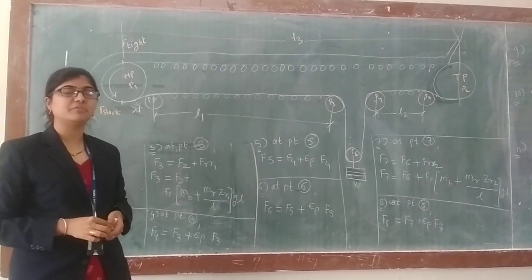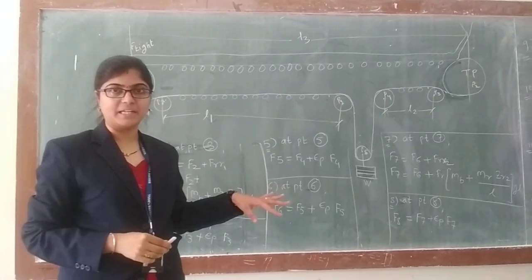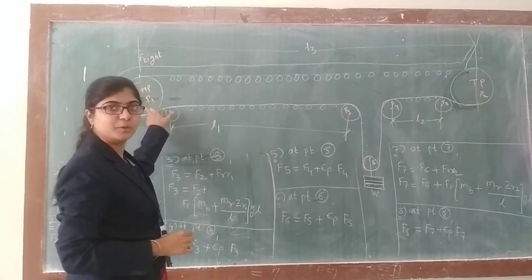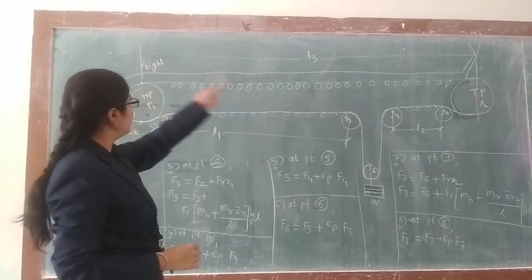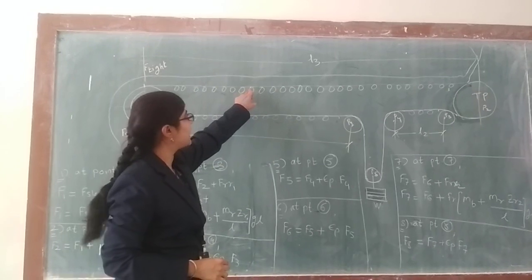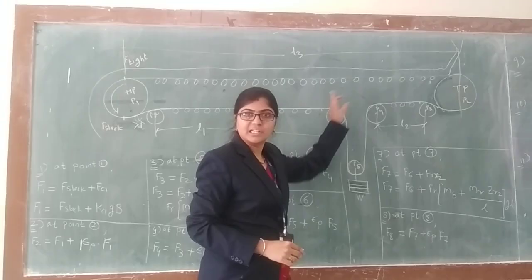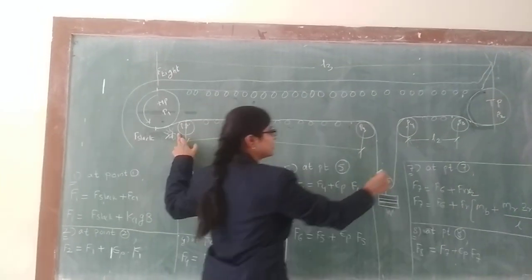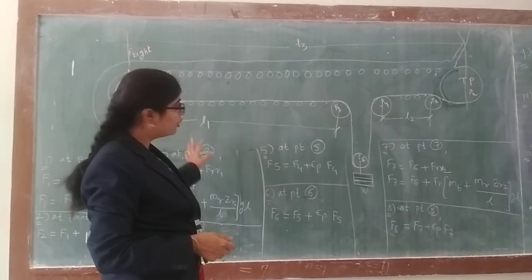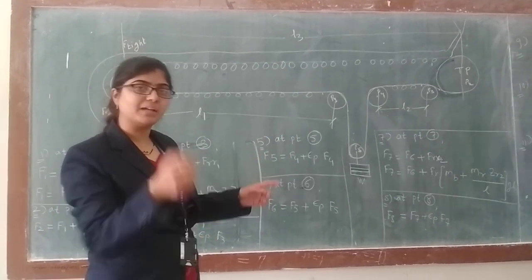As per the previous lecture, we discussed the various frictional resistances offered by the components. Now, how to apply it? We have taken one layout of a belt conveyor system. It consists of a head pulley connected to a prime pulley, then carry-on idler which supports the belt as well as the material, then return idler which supports the belt, then a belt tensioning device to maintain belt tension, and a snub pulley to change the direction of belt and increase the lap angle. Now, how to apply those formulas, we will see.